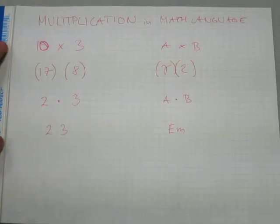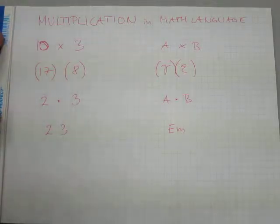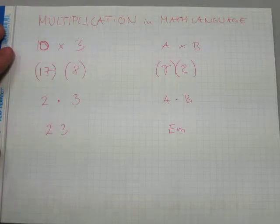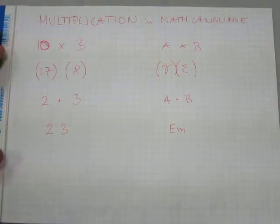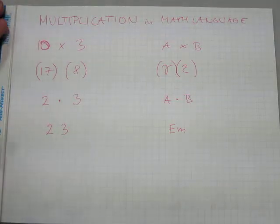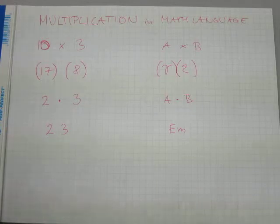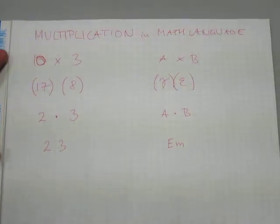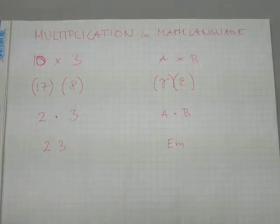For example, E times M with nothing else between the letters. E and M stand for two different quantities—they can be two and three or any other numbers. When there's nothing between them, they still mean multiplication. So those are the four major formats multiplication is indicated in math language.